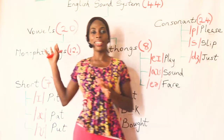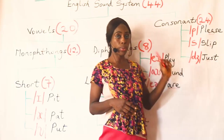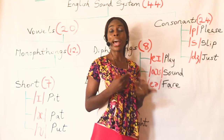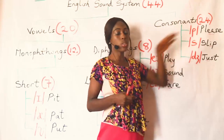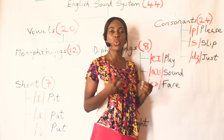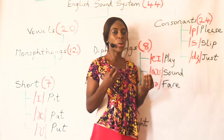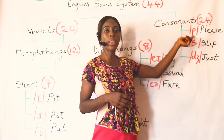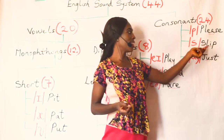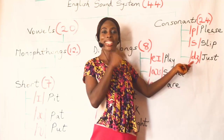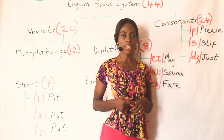Now looking at the 24 consonants — we are finished with the 20 vowels, and you'll find that the vowels are easy. The 24 consonants are easier than the vowels because we have them in the alphabet. We have the 21 consonant letters producing 24 consonant sounds. Some of these sounds are diagraphs — consonant diagraphs — where two consonants come together and produce one sound. For example, we have /p/ — the sound for letter P — as in 'please.' We have /s/ — the sound for letter S — as in 'sleep.' And we have /dʒ/ — two consonants D and J together — as in 'just.'